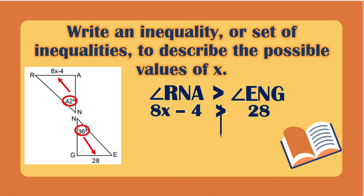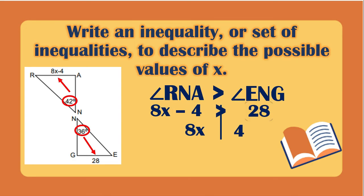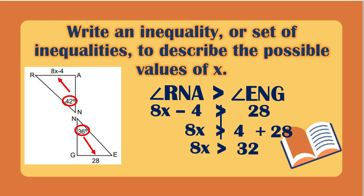Since 42 degrees is greater than 36 degrees, the opposite side of angle RA which is 8x minus 4 is greater than the opposite side of 36 degrees which is 28. So 8x minus 4 is greater than 28. Transposing: 8x is greater than 32. Dividing both sides by 8, x is greater than 4. This gives only the minimum limit since we can have unlimited values for the side, unlike for the angles.